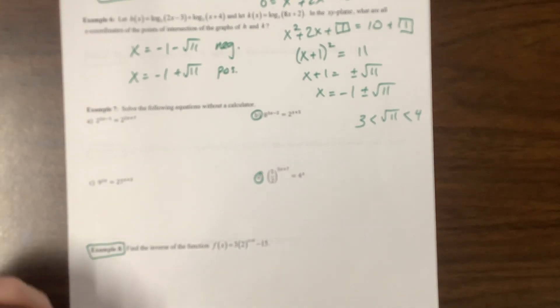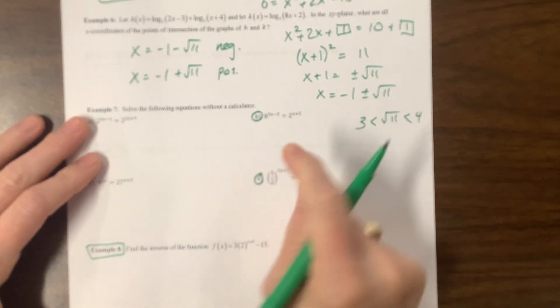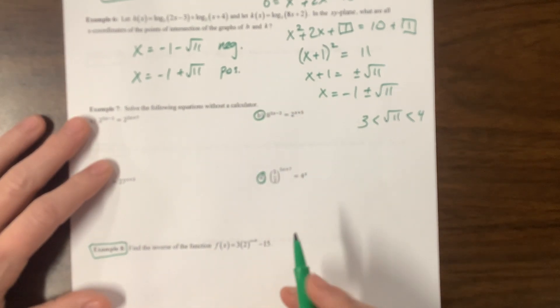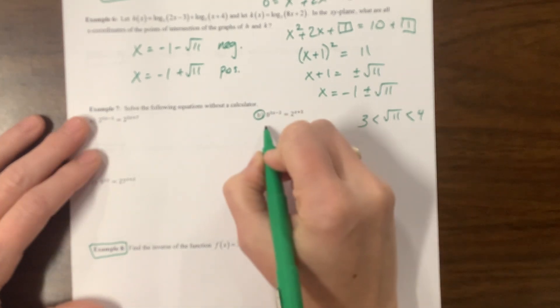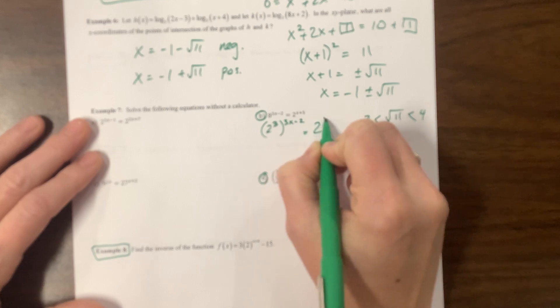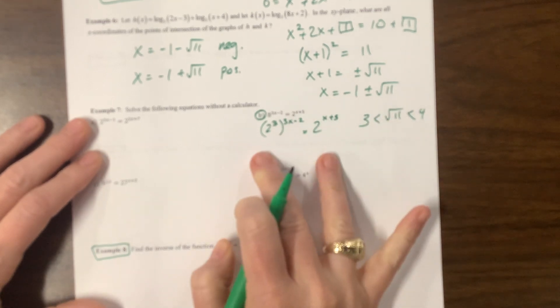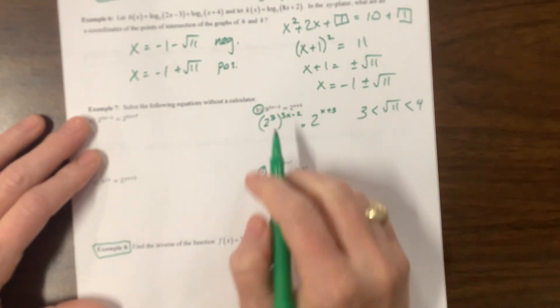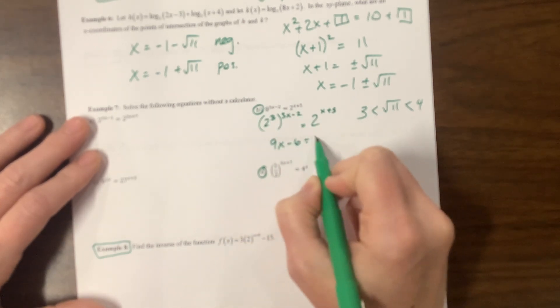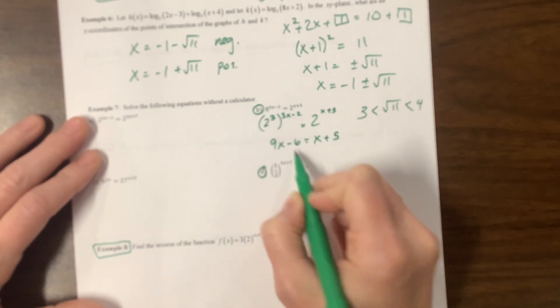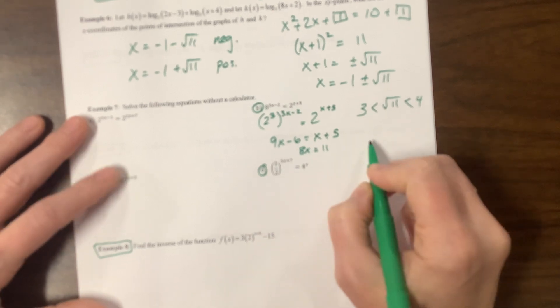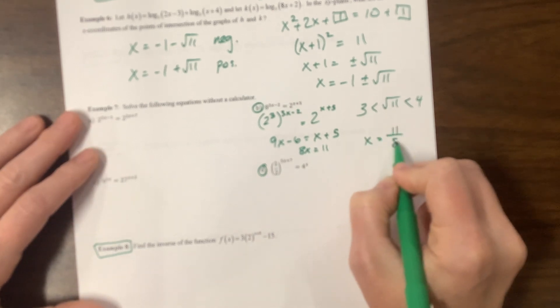This one tells you to solve the following equation without a calculator. So when I see eight and I see two, I know they're both powers of two. So this is 2^3 raised to the 3x minus 2, and this is 2 to the x plus 5. When the bases are the same, we can set the exponents equal. This is power to a power you multiply. So this becomes 9x minus 6 is equal to x plus 5. Add the six, that's 11. Subtract the x, that's 8x equals 11. So x would equal 11 over 8.